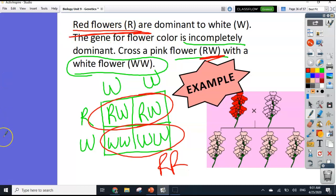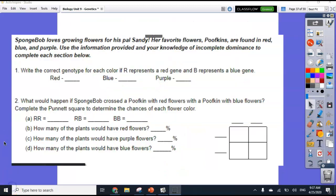So we're going to do some examples from your worksheet. So you have this worksheet attached on classroom. I'm going to do the first couple examples with you. So let's take a look at this worksheet. At the top, it says Spongebob loves growing flowers for his pal Sandy. Her favorite flowers, poofkins, are found in red, blue, and purple. Use the info provided in your knowledge of incomplete dominance to complete each section below.